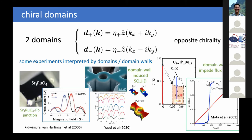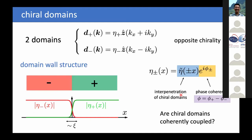So those are a few experiments interpreted in the past by domain walls, and it is worthwhile to look more deeply at domain walls. Looking at the structure of a domain wall: I have a minus and a plus domain meeting at the domain wall. On the minus side, eta-minus is finite; on the plus side, eta-plus is finite. They interpenetrate, and the width of this domain wall is of the order of the coherence length.